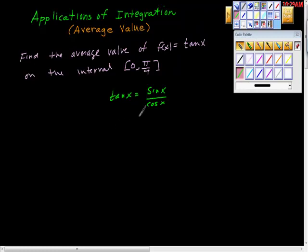So tan(0) is sin(0), and sin(0) happens to be 0, and cos(0) happens to be 1, so that's 0.